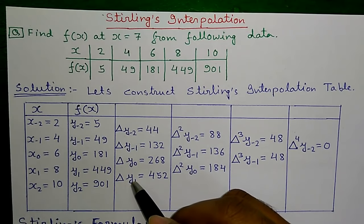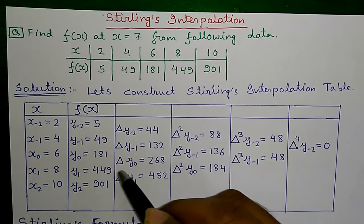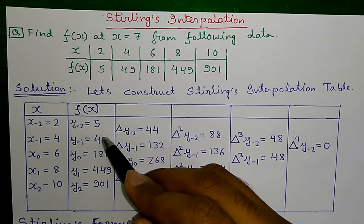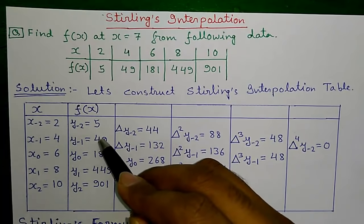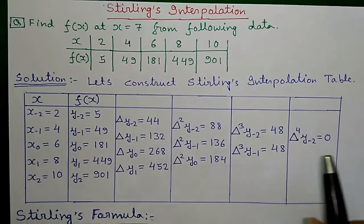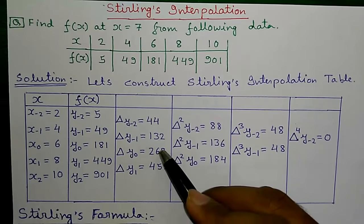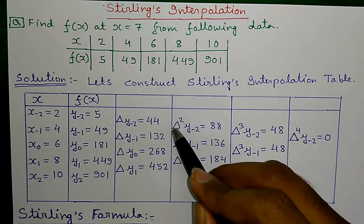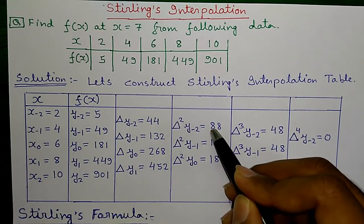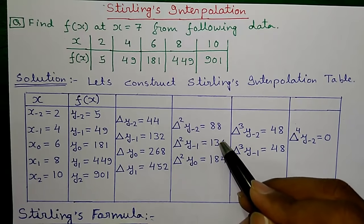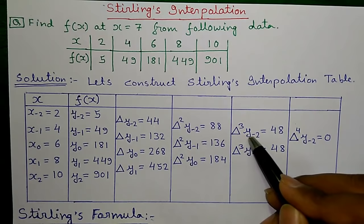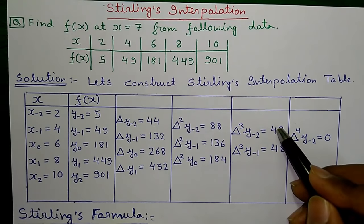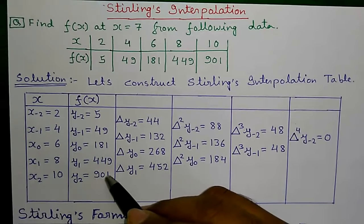Δy₁ is given by this value minus this value. Δy₀ is given by this value minus this value. Δy₋₁ is given by this value minus this value. Δy₋₂ is given by this value minus this value. Next, Δ²y₀, Δ²y₋₁, and Δ²y₋₂ are each computed as this value minus this value. Then Δ³y₋₁ and Δ³y₋₂ are computed similarly, and finally Δ⁴y₋₂ is given by this value minus this value. Remember, we always start at the bottom.